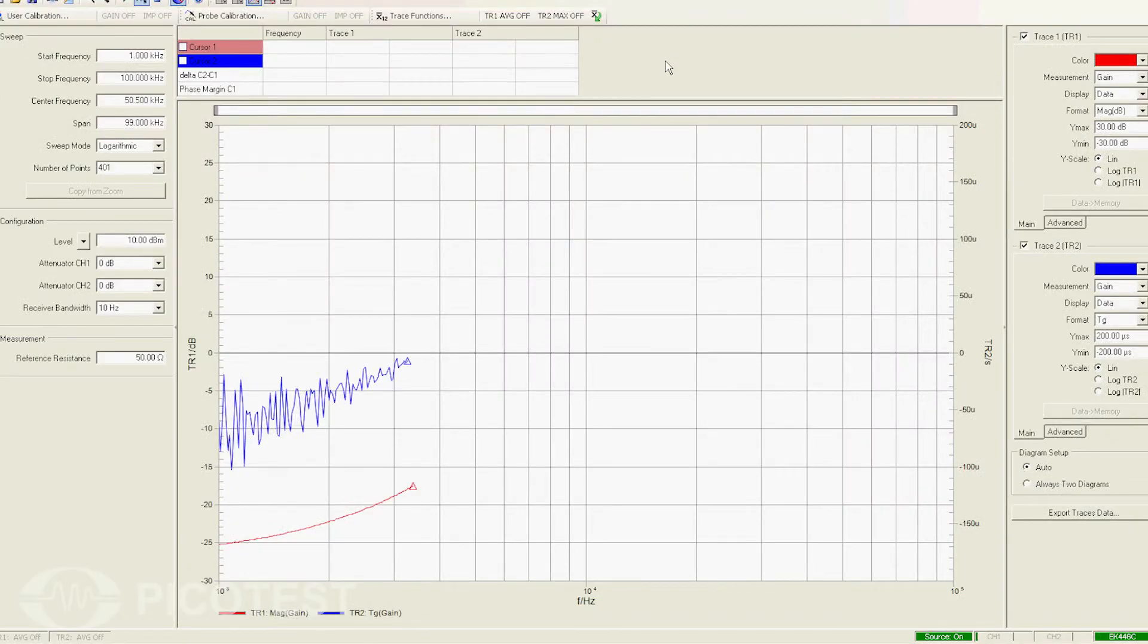Now let's replace the output capacitor with a 10 microfarad ceramic capacitor and perform the same measurement. We can see that the peak and group delay for this circuit is much steeper and higher in magnitude, indicating a much higher Q than before.